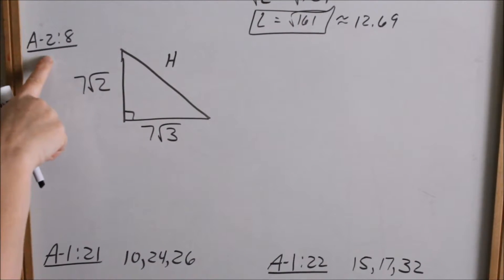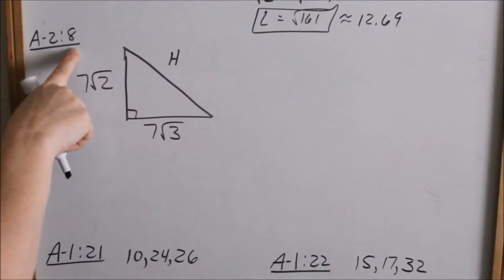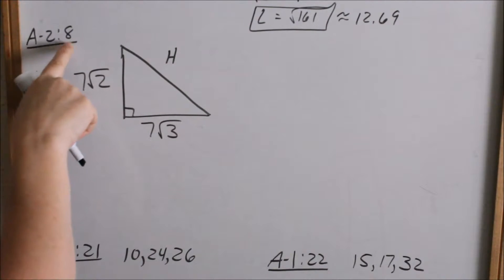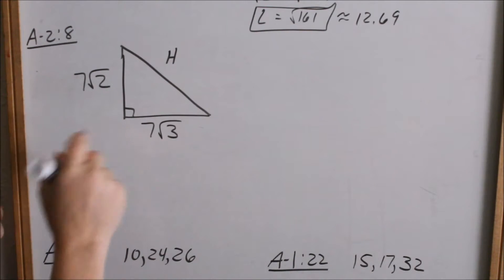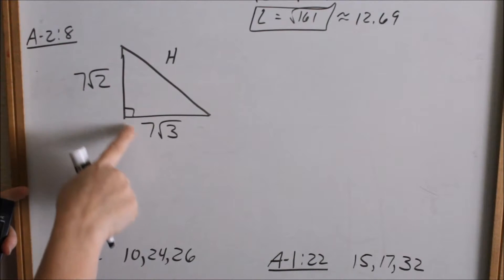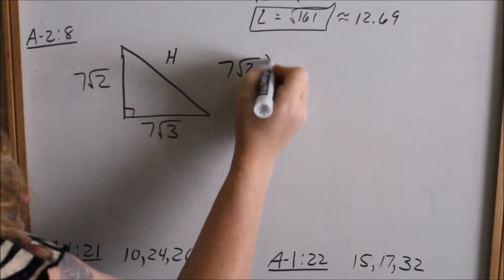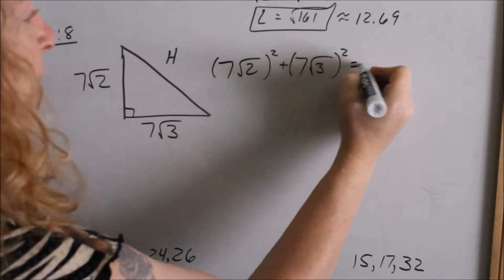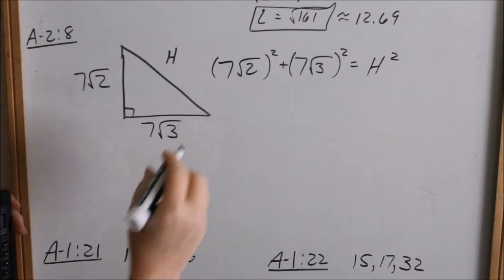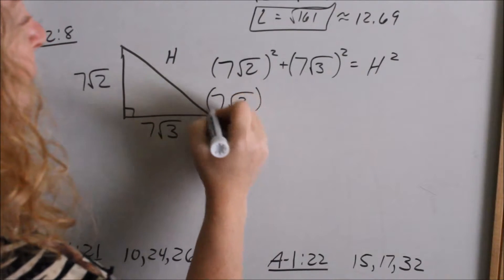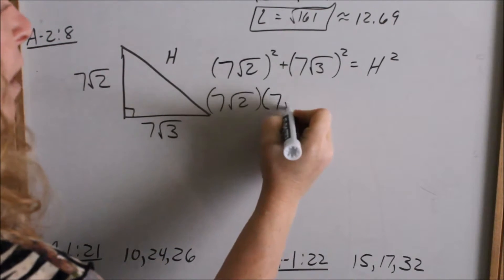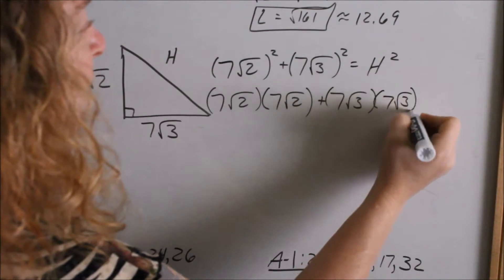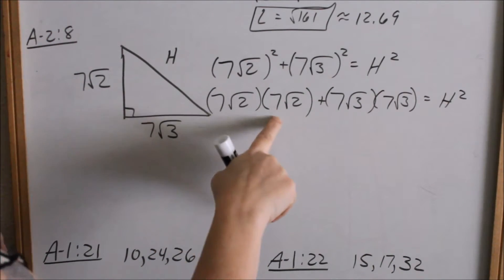Now, what if we want to use Pythagorean Theorem with radicals? This is Appendix A, page 2, problem number 8. Same thing — you can use Pythagorean Theorem: leg squared plus leg squared equals hypotenuse squared. We have 7 times the square root of 2, squared, plus 7 times the square root of 3, squared. It's important to put the whole expression in parentheses. I'm going to write it out the long way so you can remember how to multiply numbers and radicals. Numbers to numbers, radicals to radicals.